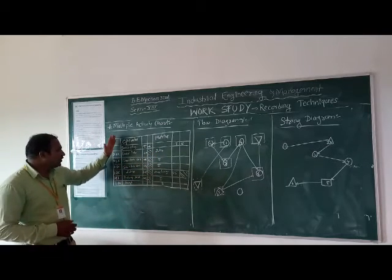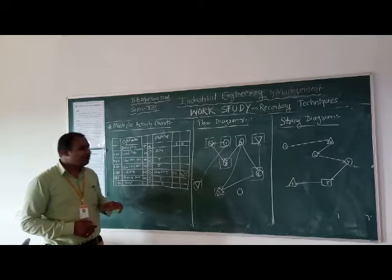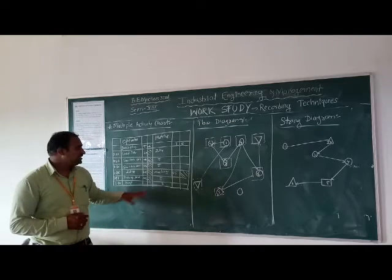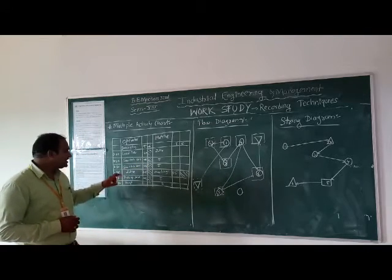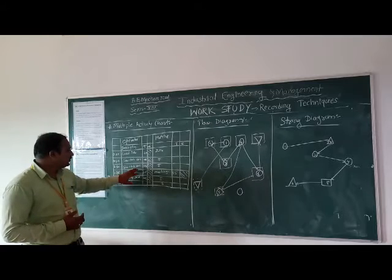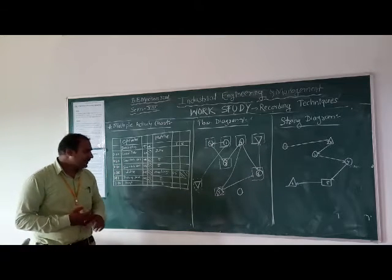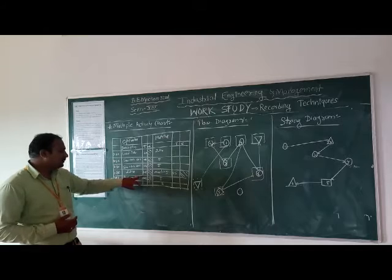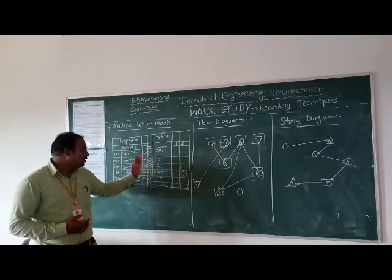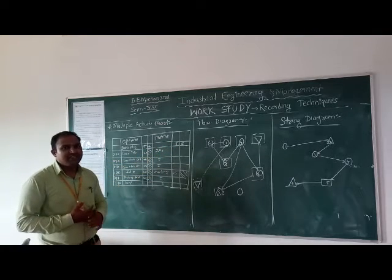The table shows the activities. The first activity by the operator is loading the job, which requires 0.20 minutes. Then switching on the machine requires 0.08 minutes, making a running total of 0.28 minutes. Another switch-on operation also requires 0.08 minutes, bringing the total to 1.36 minutes. When the operator is in an operating condition, the machine is in an idle condition, indicated by an empty rectangle.